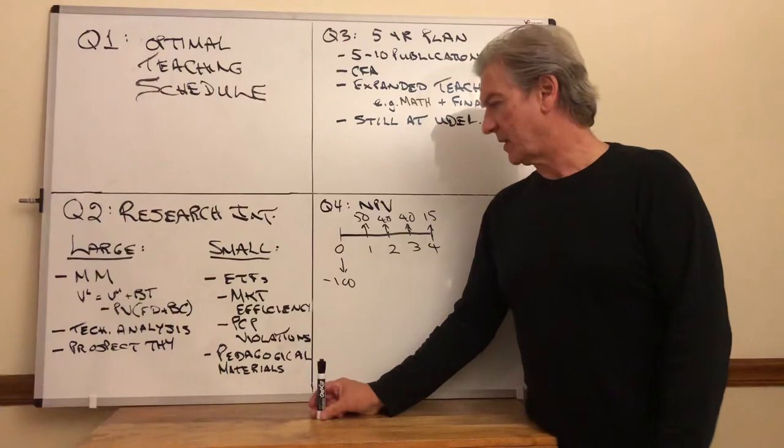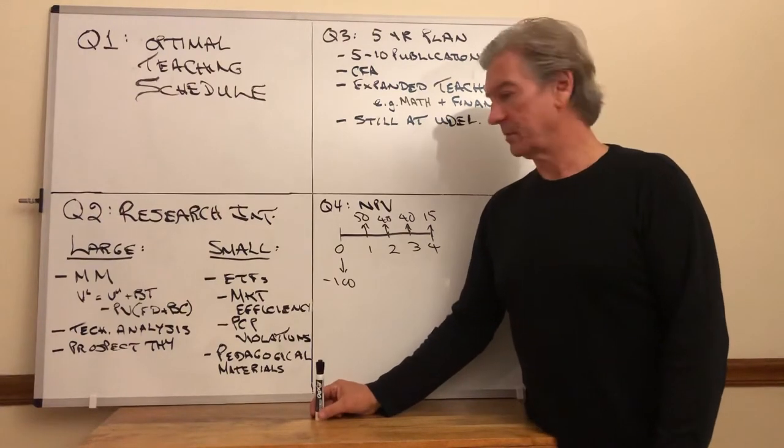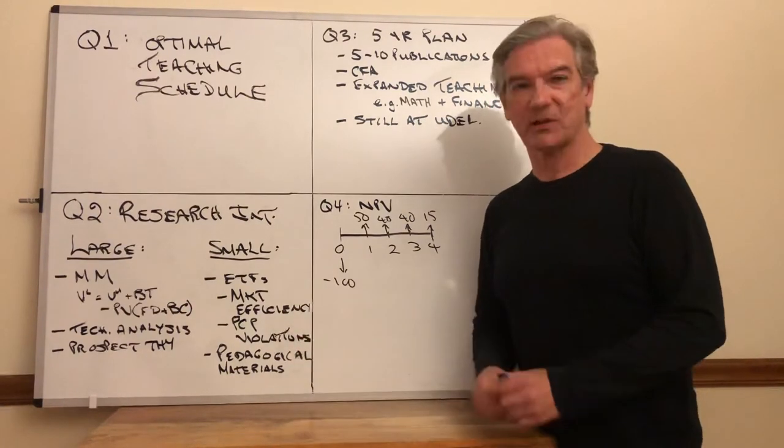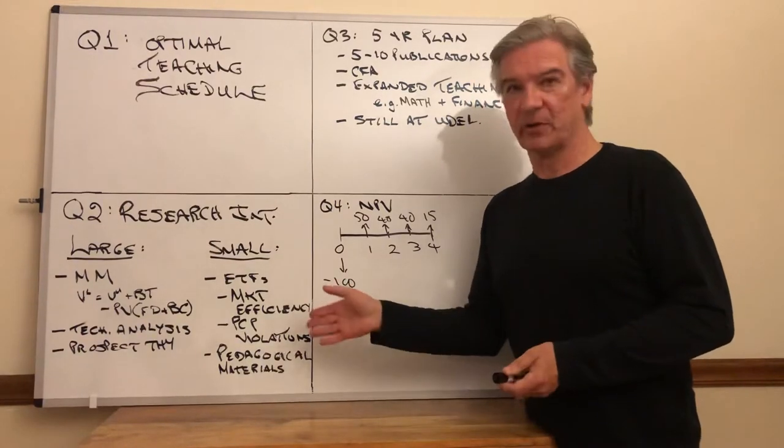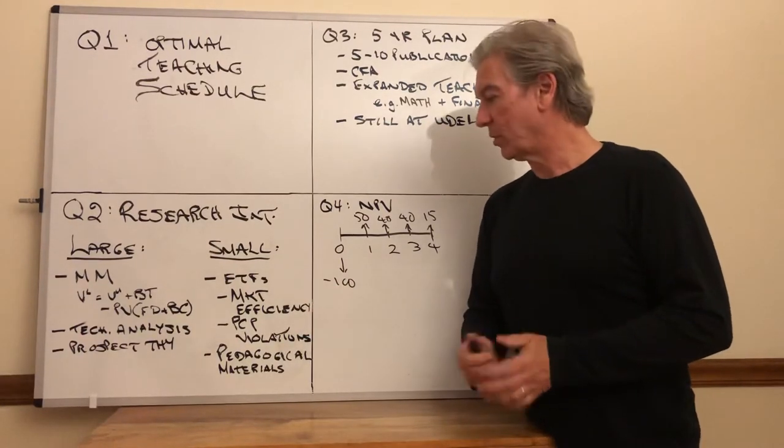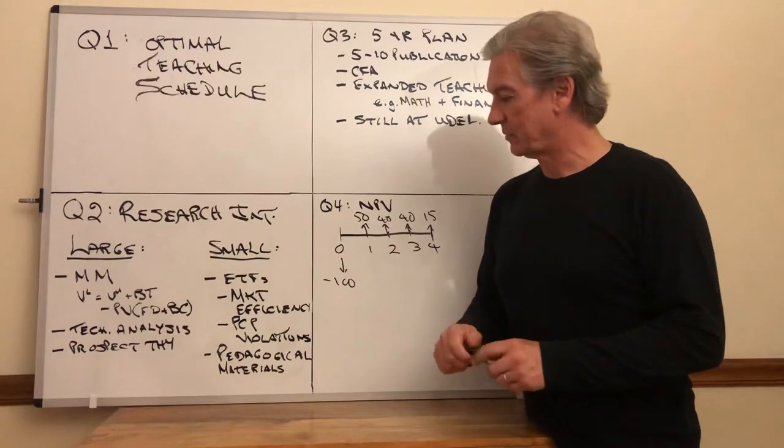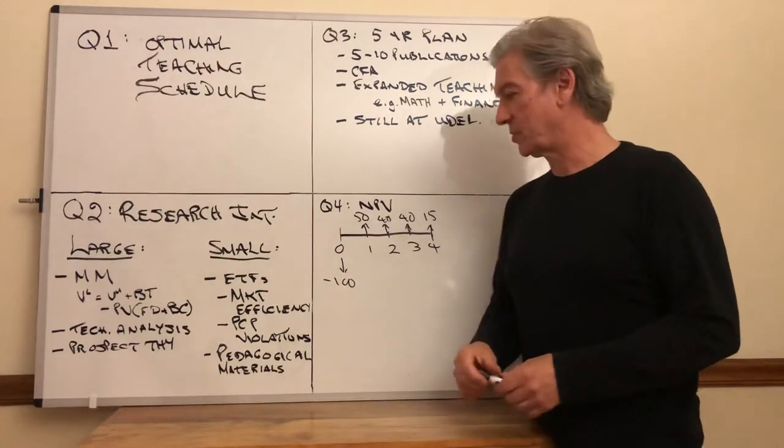I also have a category here: PCP, that's put-call parity. I've been looking at options, call and put options on ETFs, and I find that there are arbitrage opportunities there. The put-call parity doesn't hold. I don't know why, I think it might be a result of thin trading, but that's something that I need to investigate.